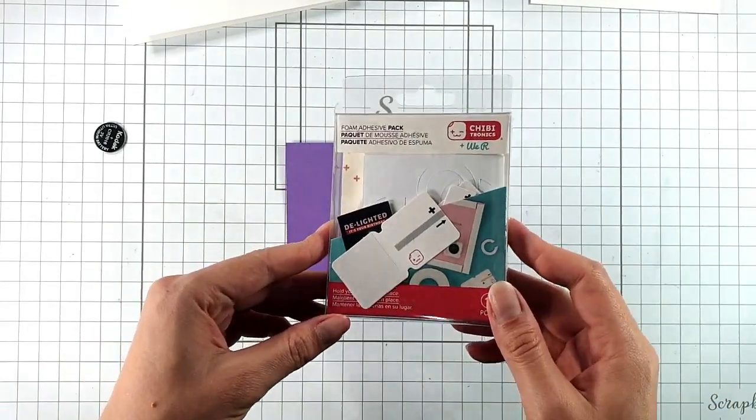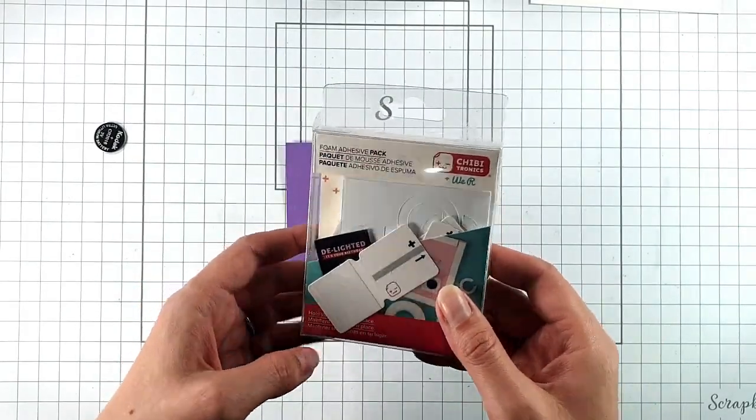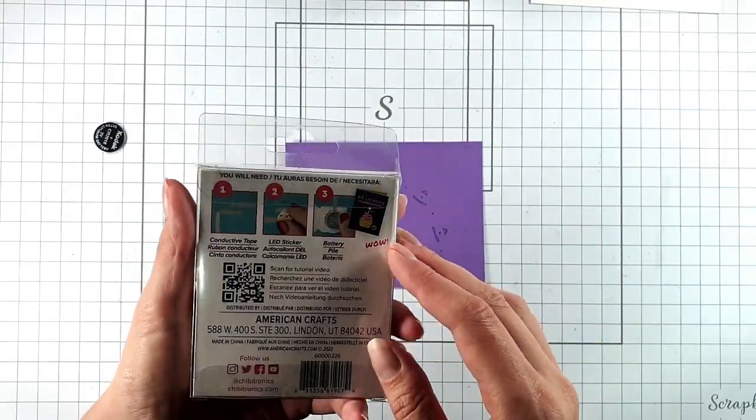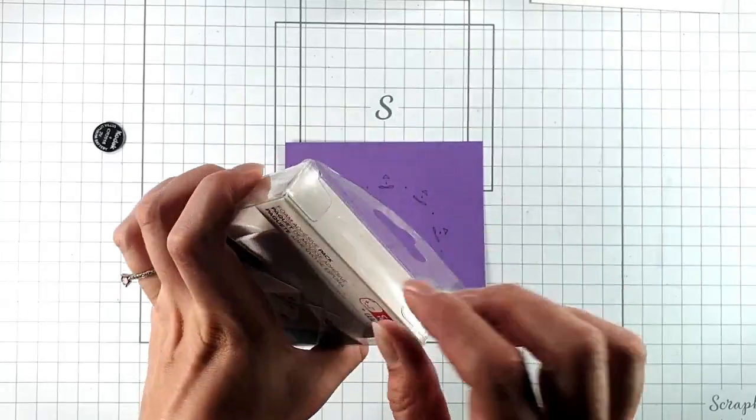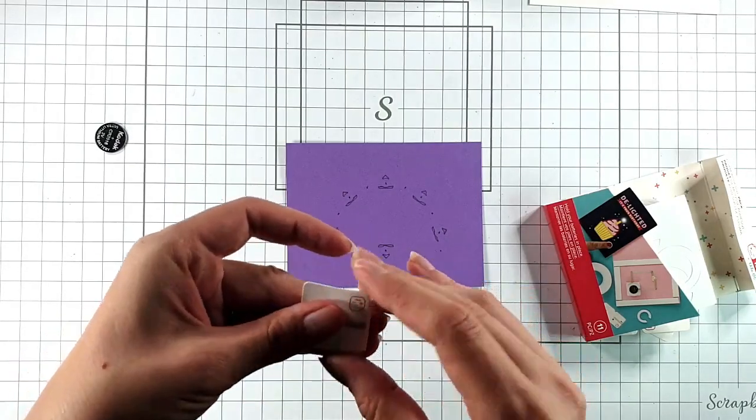Then I'm going to build up my circuit and my favorite way to do that is to use one of these switch kits. You get the switches, the battery holders and the tape in there. So you get five of each of the switches and the battery holders.